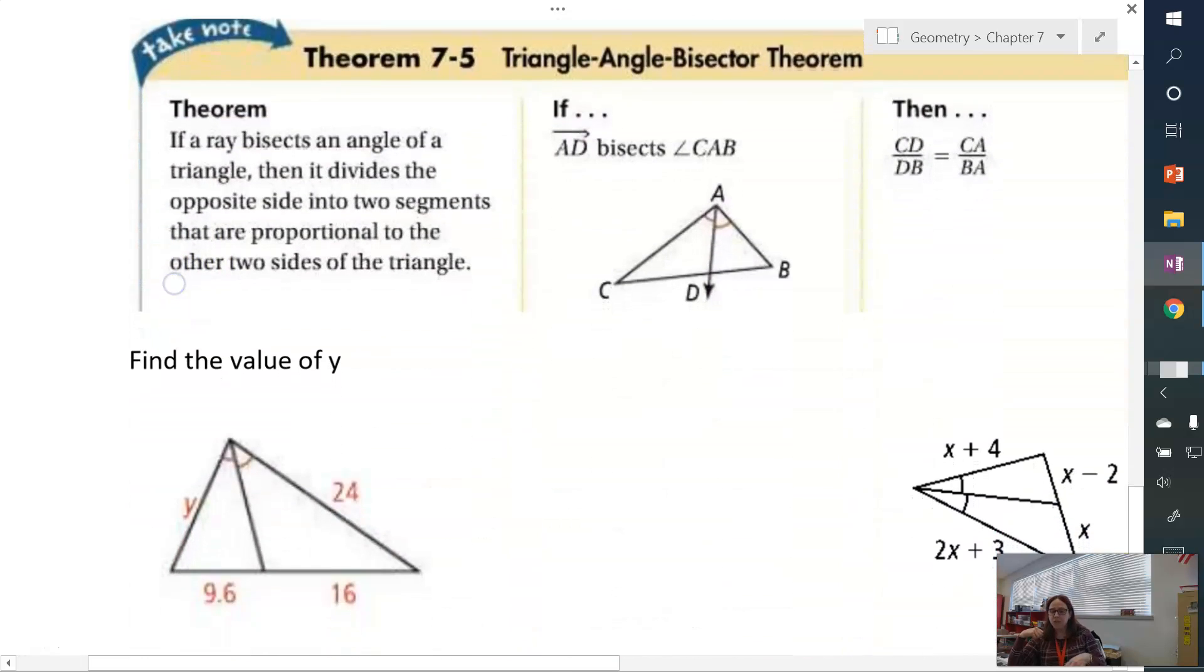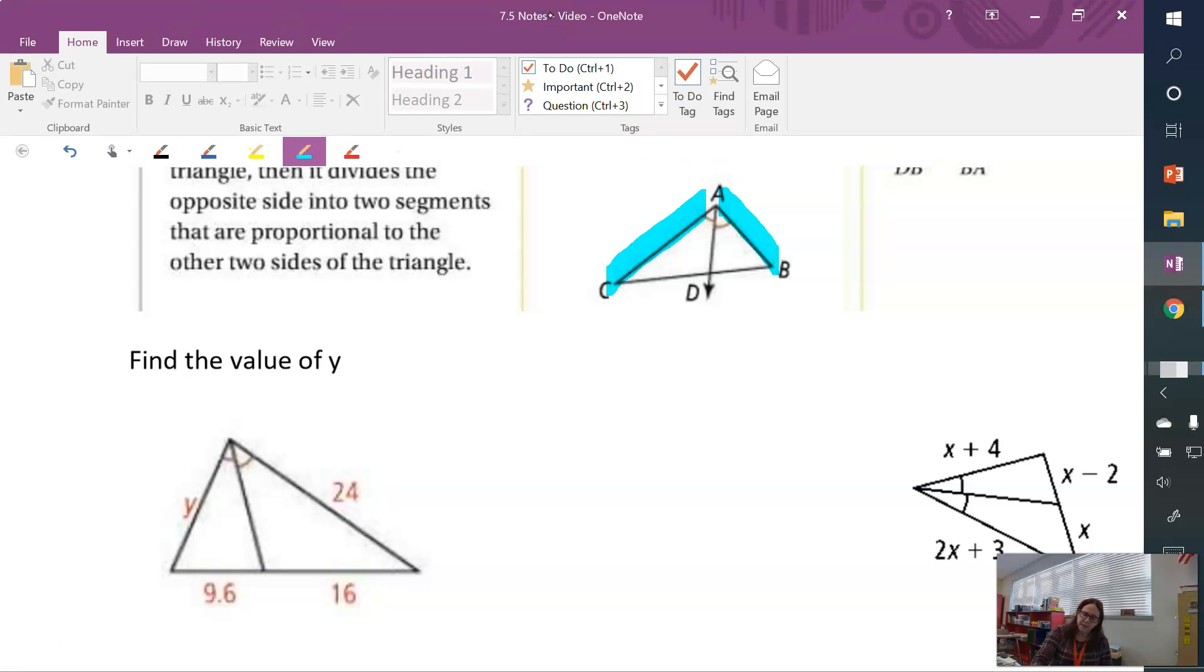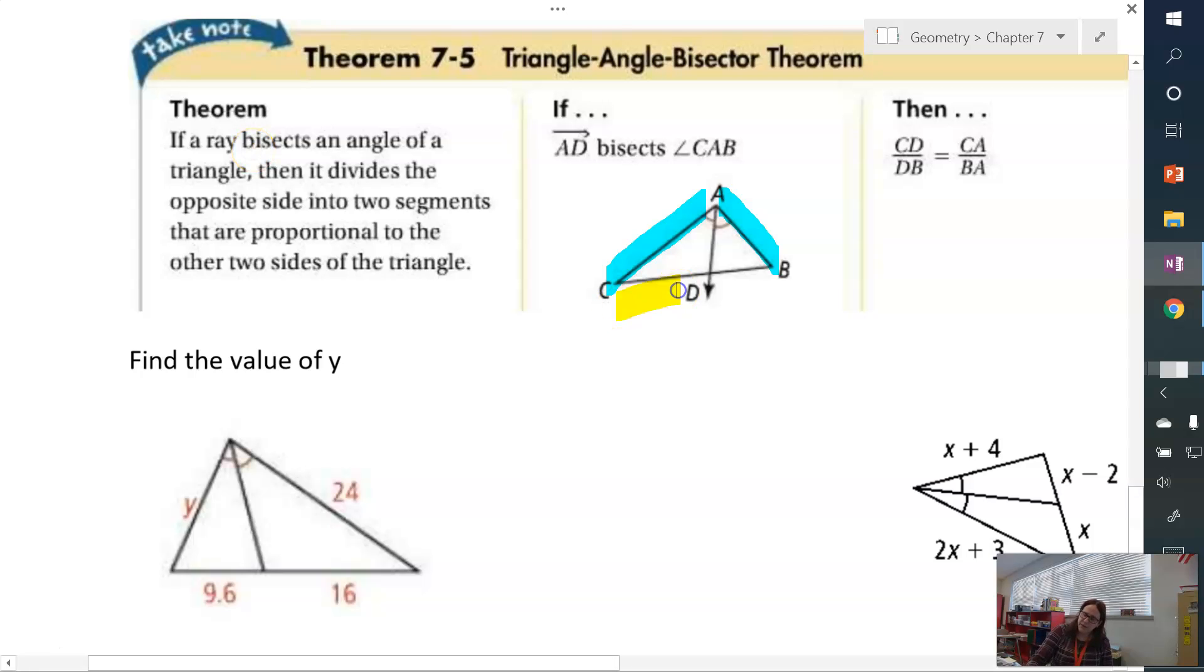Now, the next idea is the triangle angle bisector theorem. In this case, the segment or ray in this picture is bisecting an angle. And when that happens, we can write a proportion where we relate CA to BA. And then we can relate CD to DB. And the easy way to think of this is I take this ray that I have in here, and I just extend it. I make it really long. And this is my fraction bar. And then one side is going to be all numerator, and the other side is all denominator.